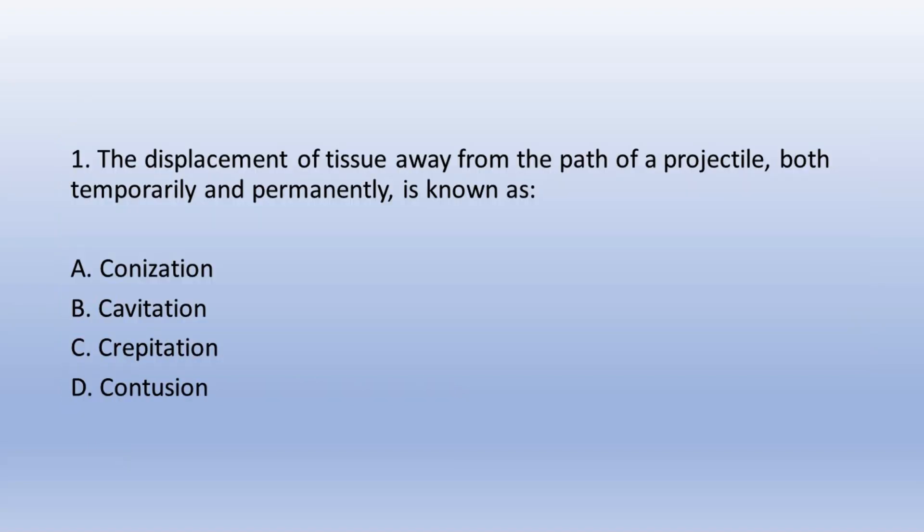Question 1. The displacement of tissue away from the path of a projectile, both temporarily and permanently, is known as: A. Connization, B. Cavitation, C. Crepitation, D. Contusion. The answer is B. Cavitation.